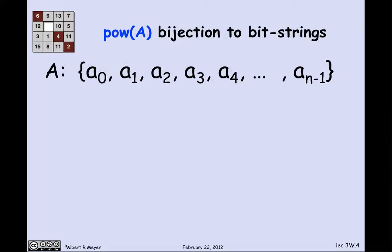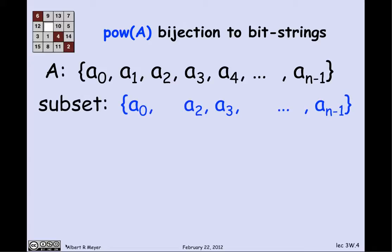Let's see what the counting argument in general would be. Suppose A has n elements, numbered from A₀ up through A_(n-1), because computer scientists usually use 0-origin indexing. Suppose I have some arbitrary subset of A — say it has A₀, no A₁, it has A₂ and A₃, doesn't have A₄, and ends with A_(n-1) in it.